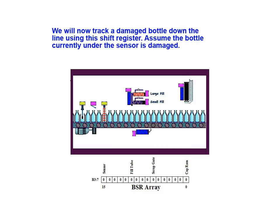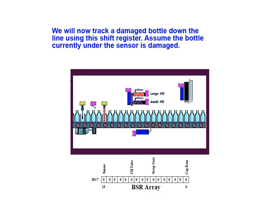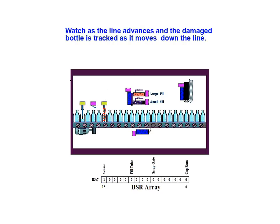We will now track a damaged bottle down the line using this shift register. Assume the bottle currently under the sensor is damaged. The sensor detects this damage and a 1 is loaded into the shift register in the first location as the arrival sensor detects a bottle arriving. Watch as the line advances and the damaged bottle is tracked as it moves down the line.